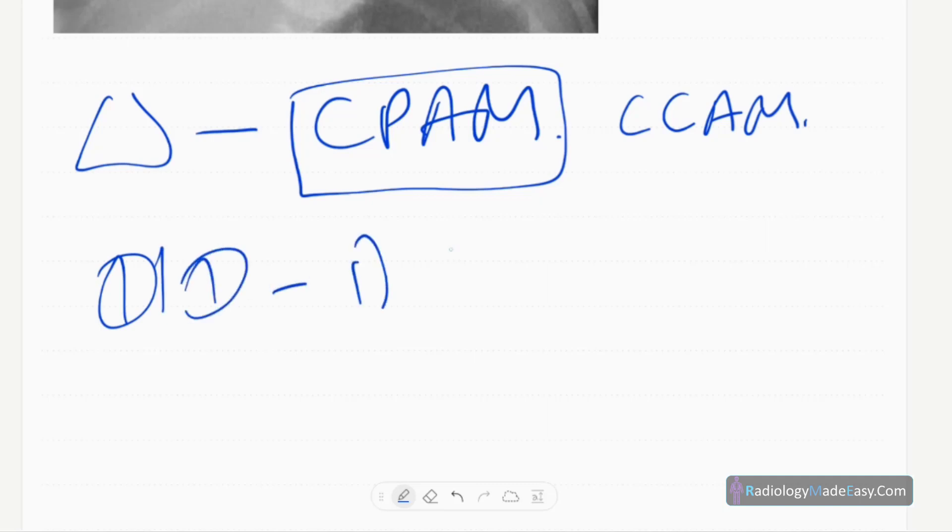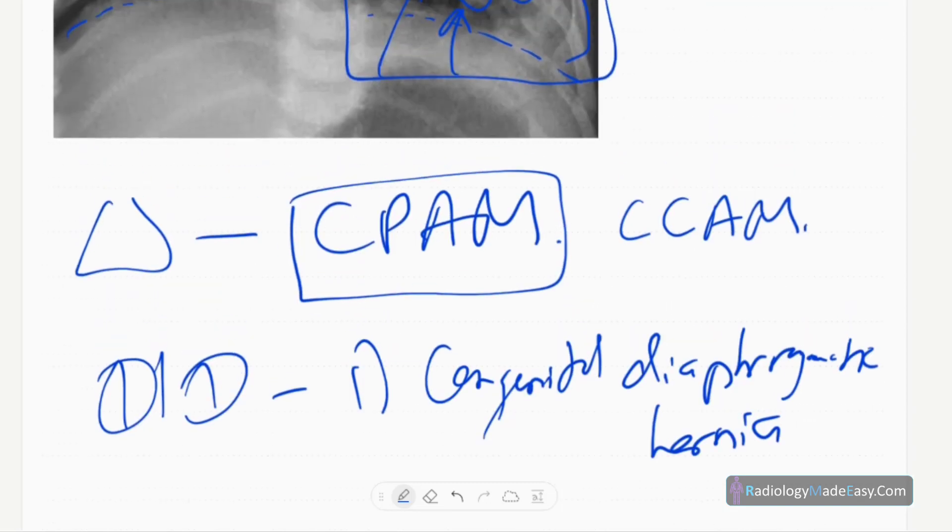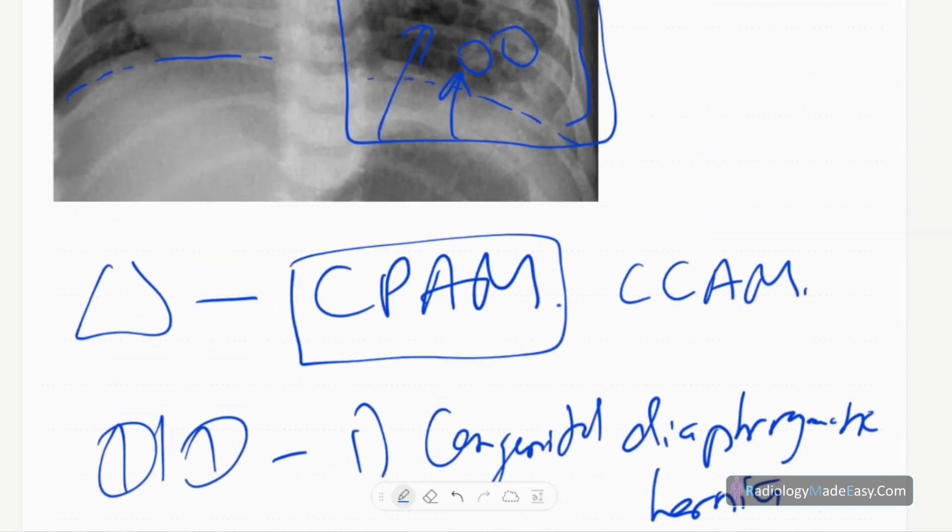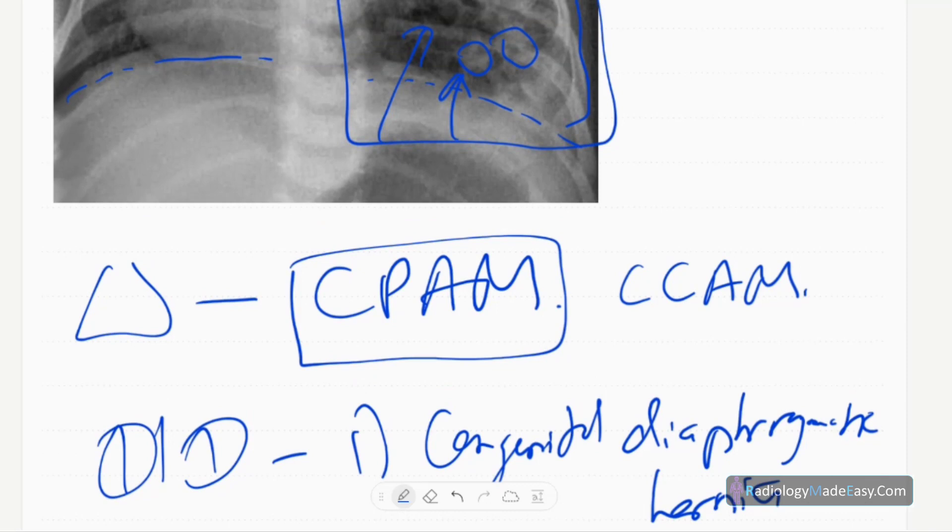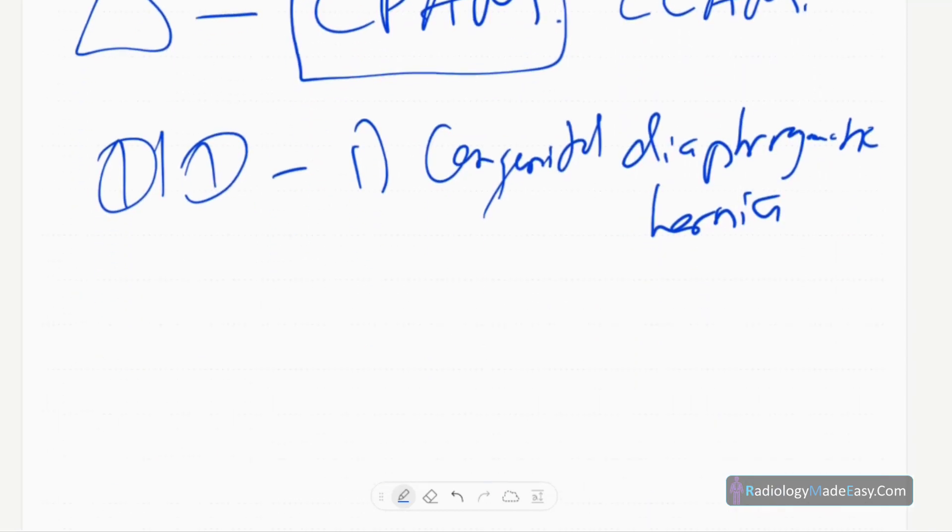Congenital diaphragmatic hernia. In congenital diaphragmatic hernia, you can see the continuation of diaphragm. One differential for cystic lucencies...